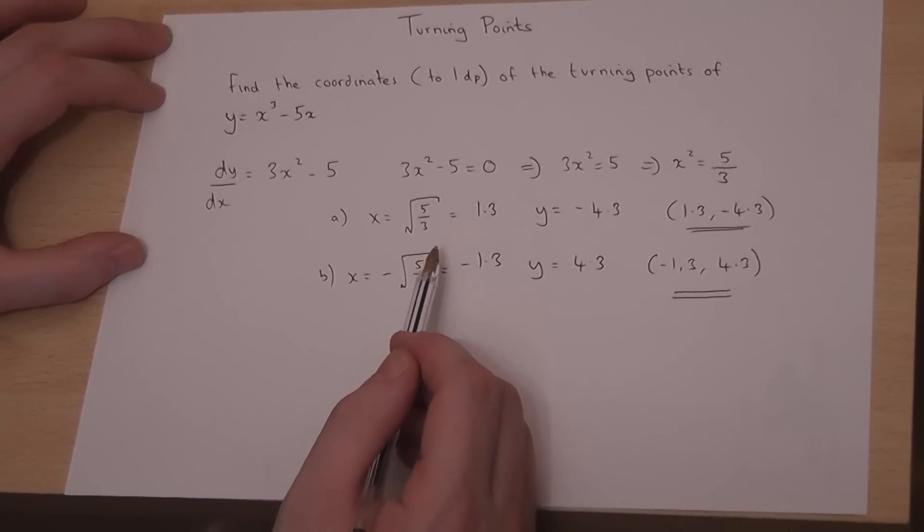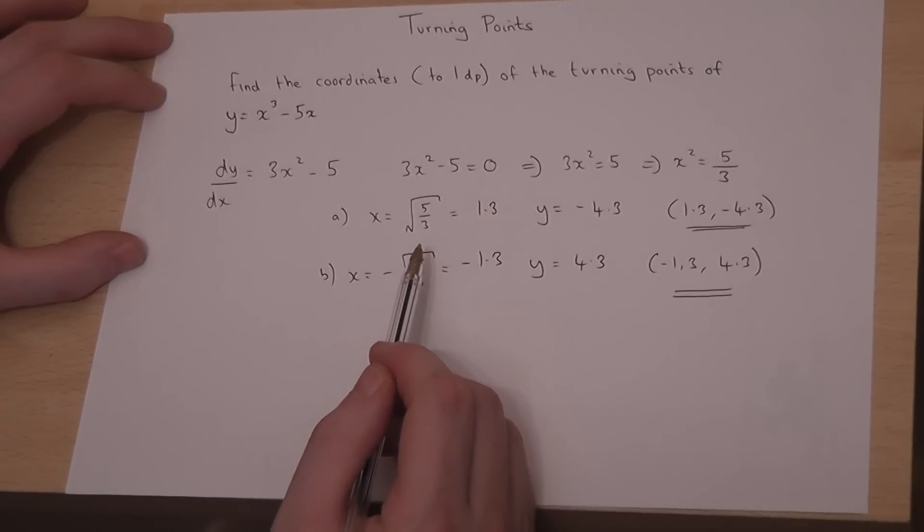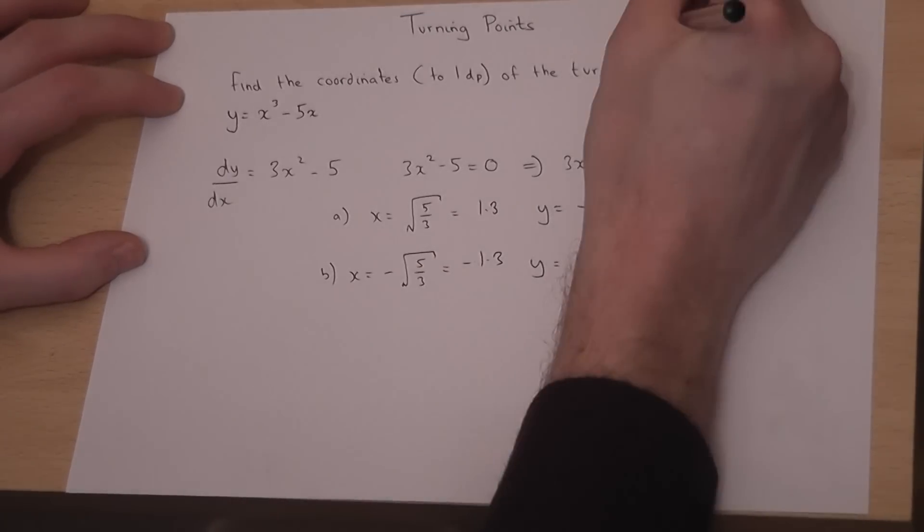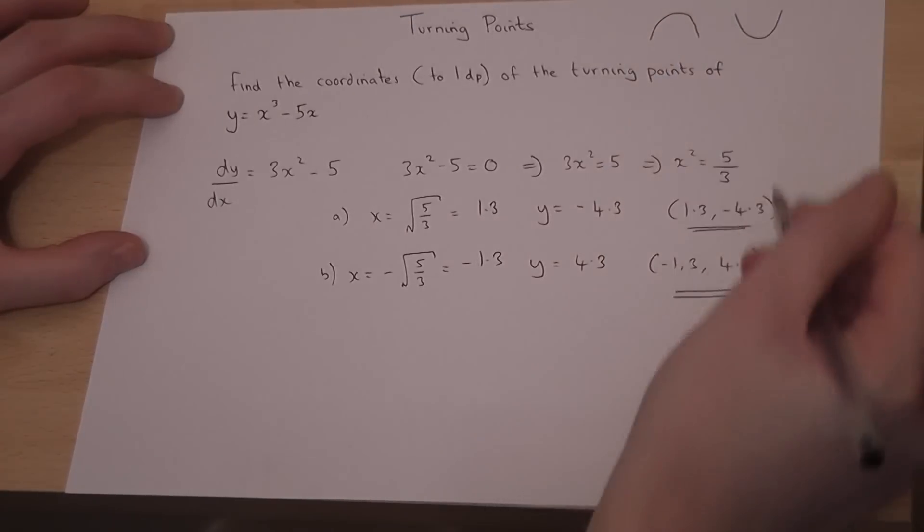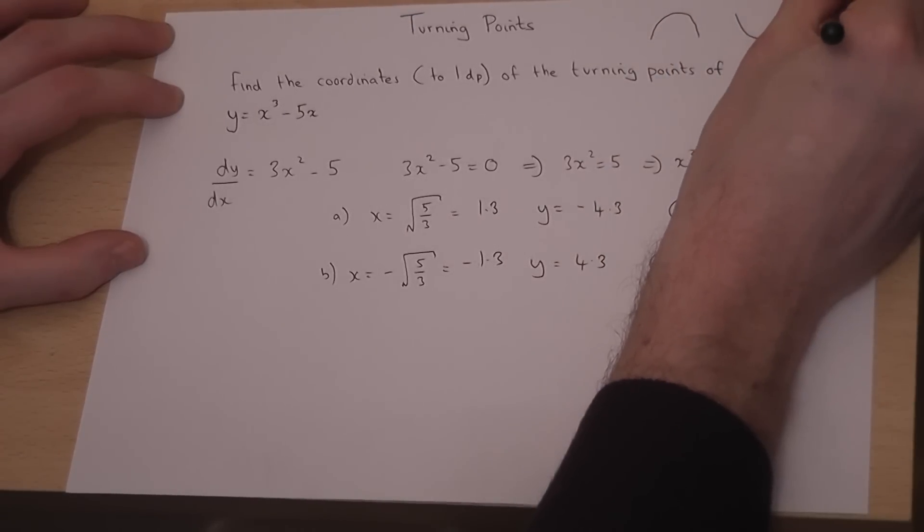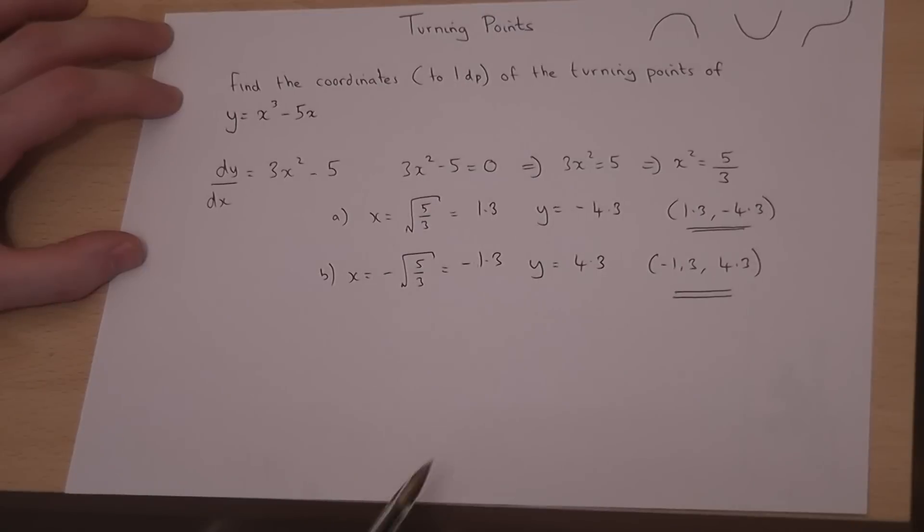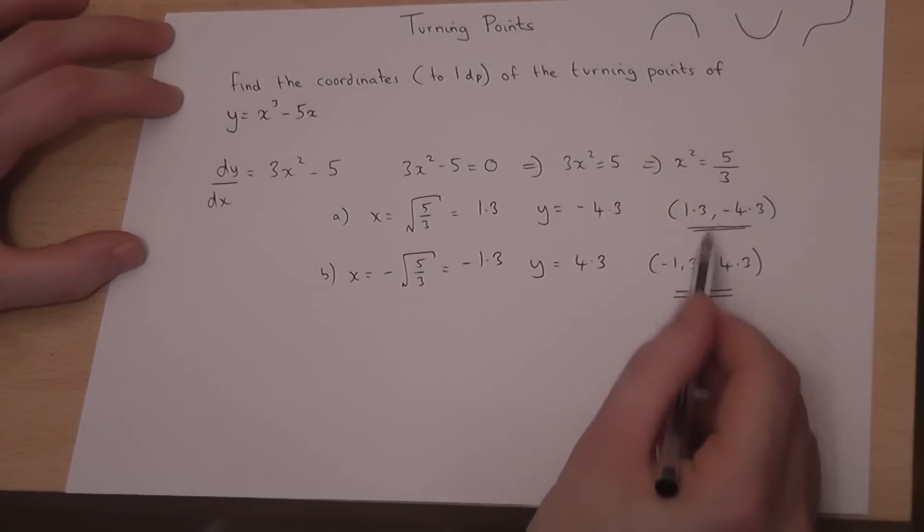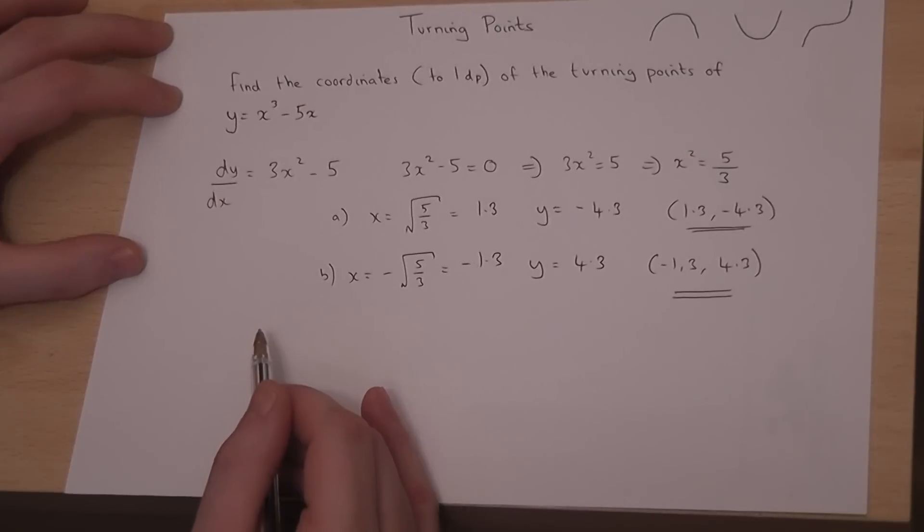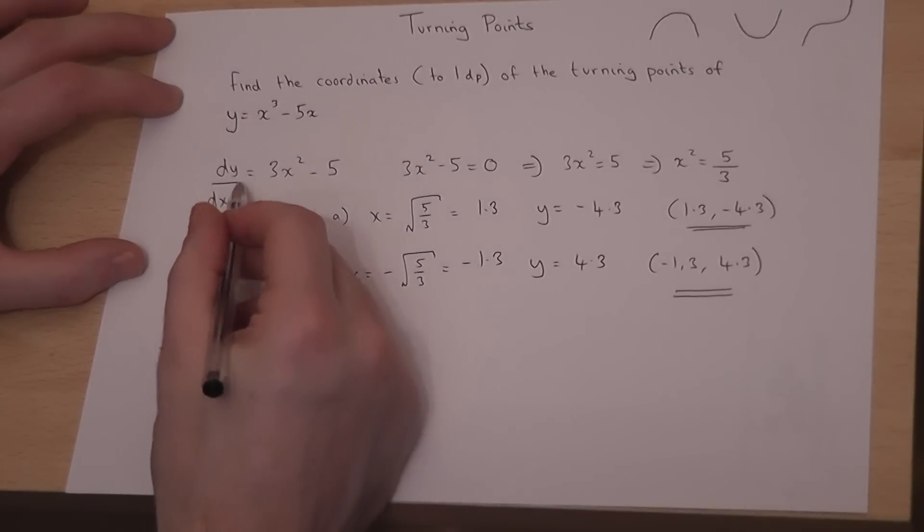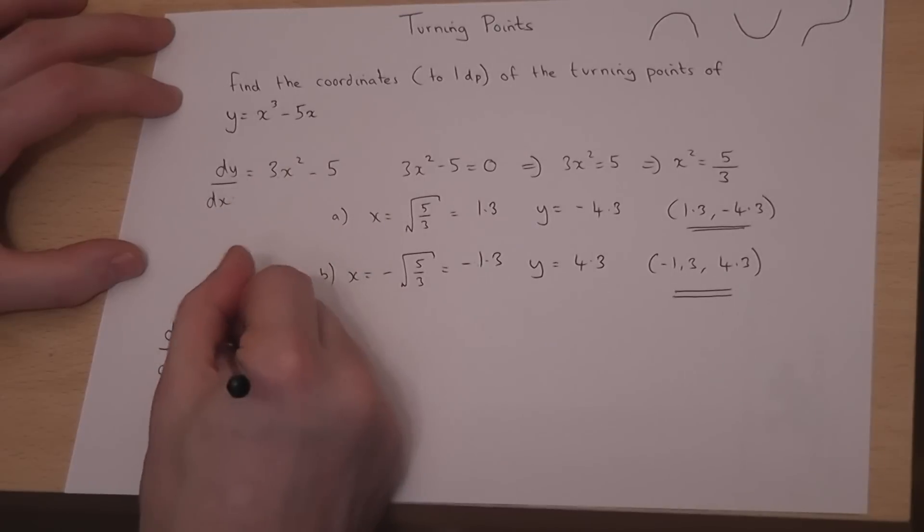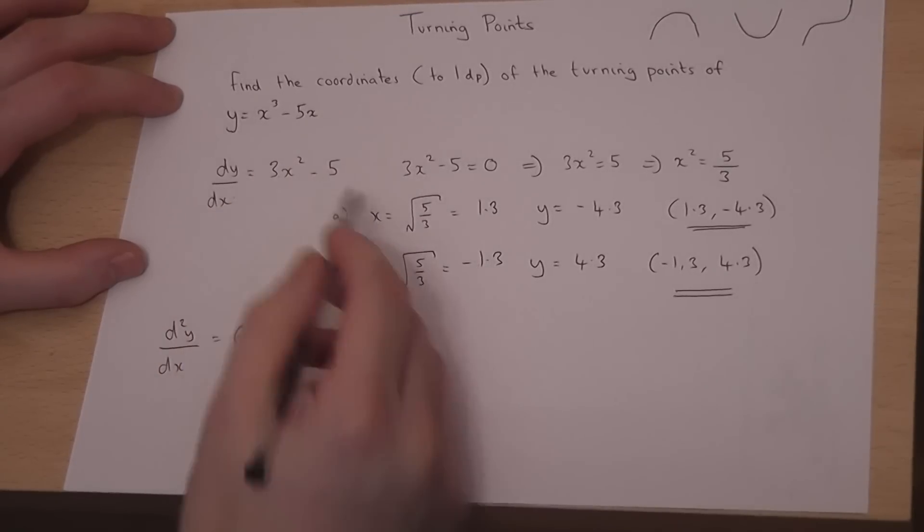I will briefly mention as well how we can then classify what these turning points are, because we either get a max point or a min point, or potentially what's called a point of inflection. Now, one way to check what these values are is to do what's called the second differential test. If I differentiate again, which means to take my dy by dx and differentiate both these terms for a second time, this becomes 6x, and the 5 vanishes.